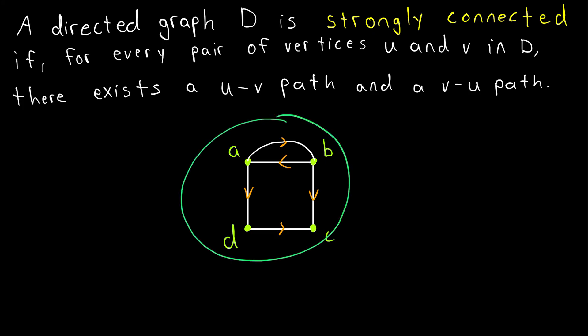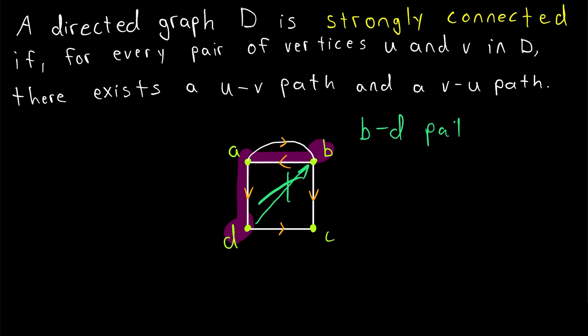Here is another directed graph. Is this directed graph strongly connected? If you look closely, you'll see that it is not. For example, it's possible to get from B to D, but it's not possible to get from D to B. So although there is a B-D path in this graph, there is no D-B path. So since we can't travel between every pair of vertices in either direction in this graph, it is not strongly connected.